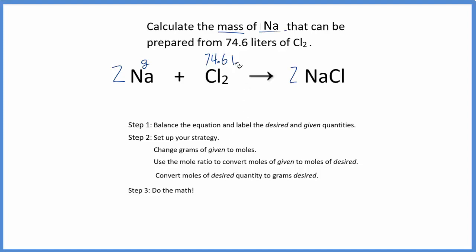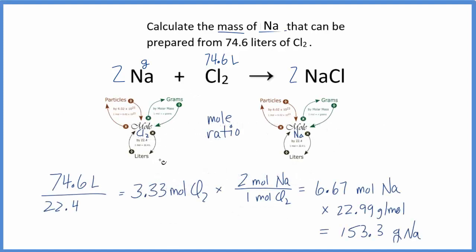So the difference here is we start with liters, but we can convert liters to moles, use our mole ratio to find the moles of sodium, and then change that to grams. So here's how I would set that up. So I have my liters, 74.6 liters, and then I divide that by 22.4, and the units are actually moles per liter for that conversion factor. And I can see liters cancel out.